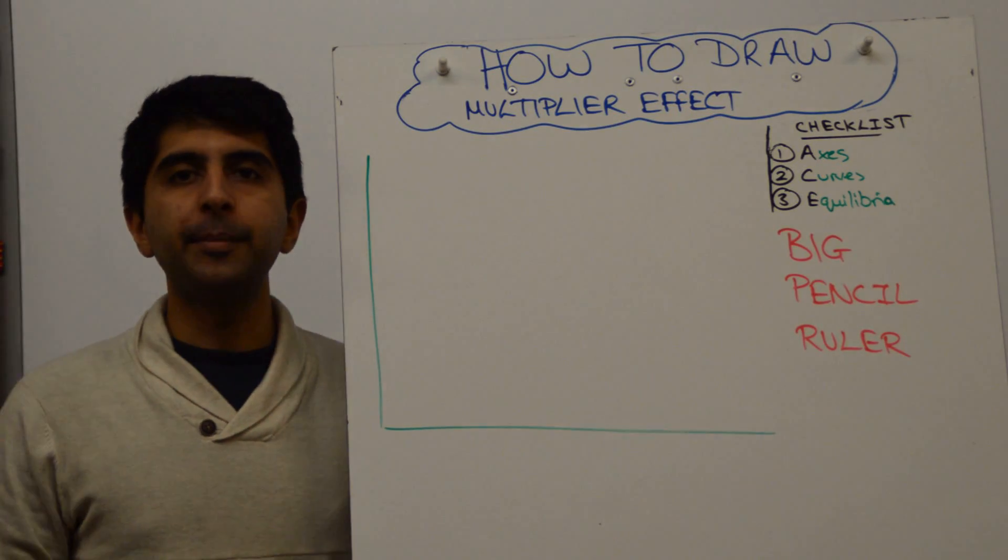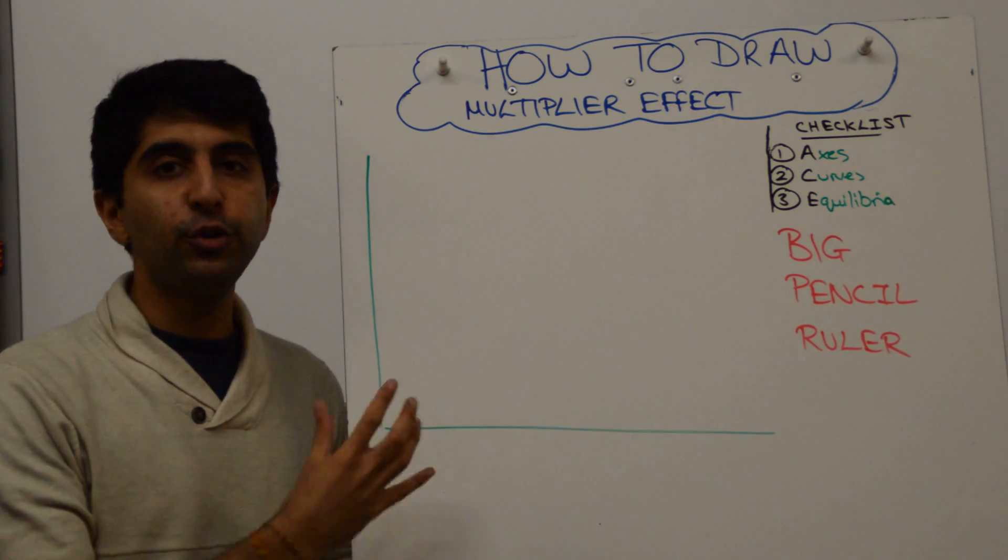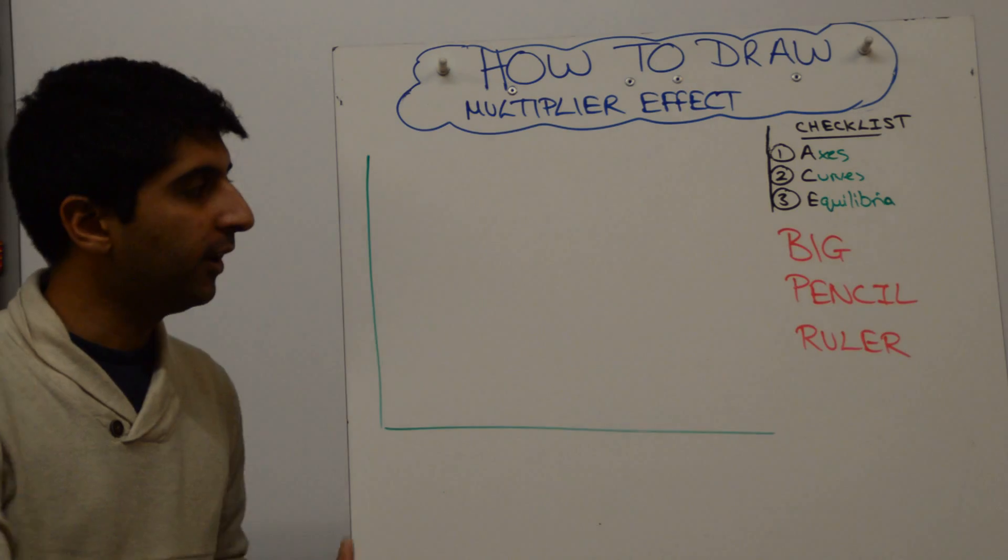Hi everybody! You want to demonstrate the multiplier effect. How do you do that on a diagram? How do you construct it? Well,